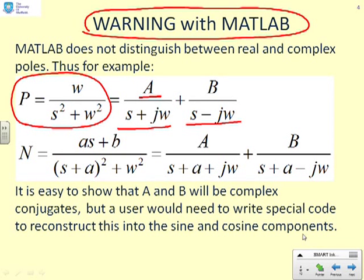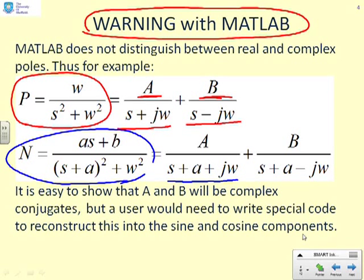A different example here. What if you had N equals as plus b over s plus a all squared plus omega squared? MATLAB won't recognize that's a quadratic factor in the denominator. It will say you've got a pole factor here, s plus a plus jω, and another pole factor, s plus a minus jω, with corresponding residues A and B, which will be complex. Now you can show that these capital A, capital B are complex conjugates, but there isn't really much point in that because that's algebra for the sake of it.